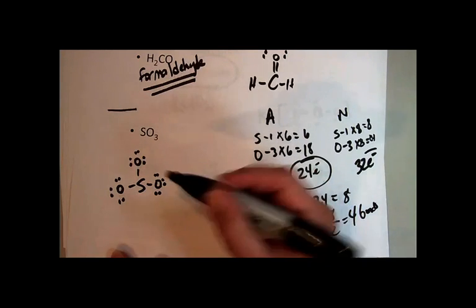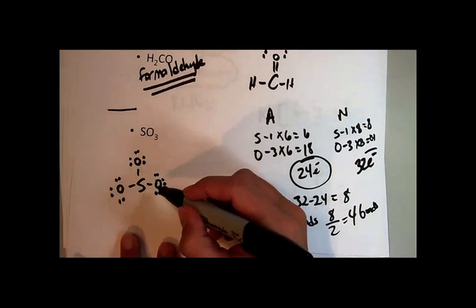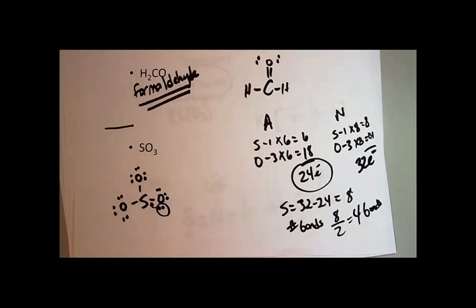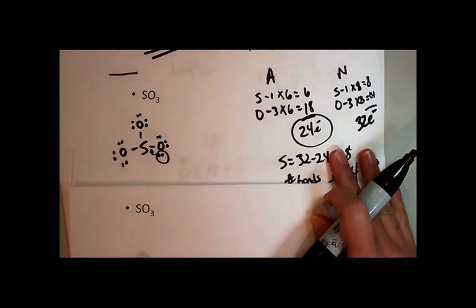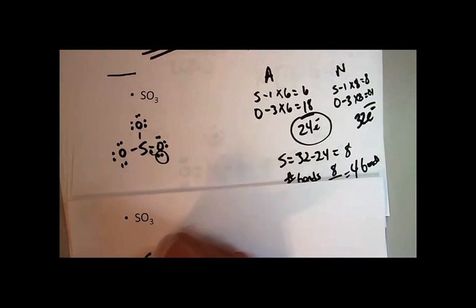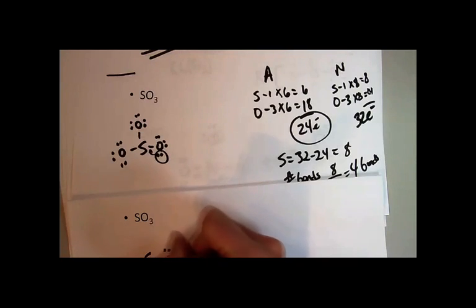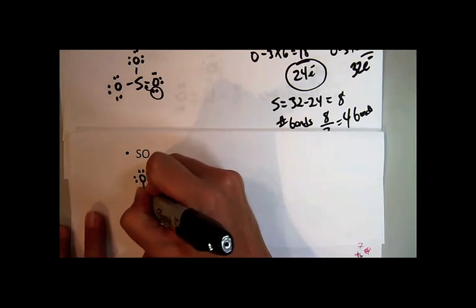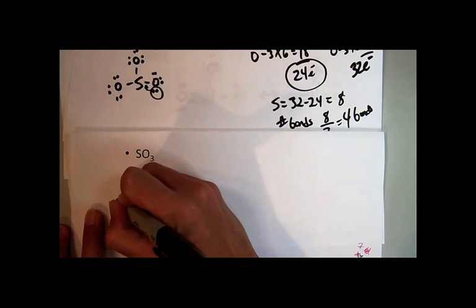So according to the rules, you can take a non-bonding pair and form a double bond. And when you do that, when you do that for sulfur trioxide, what you end up making then is this double bond here and then I have two electrons there and then I still have this oxygen with its six and this oxygen with its six.